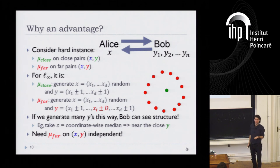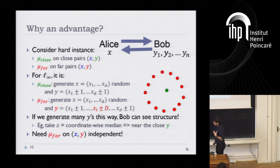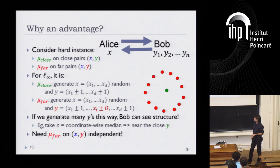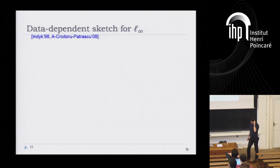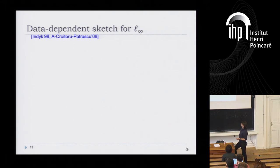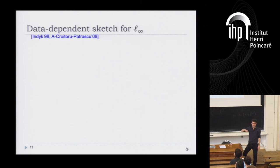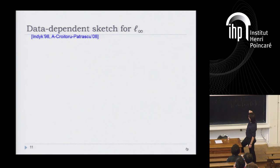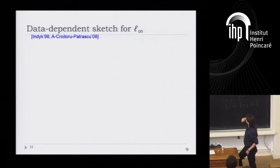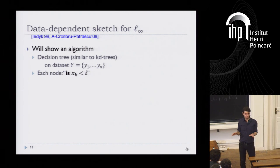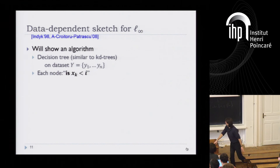This data-dependent sketch for L-infinity is due to Piotr Indyk from 1998, and the analysis I'll show is due to joint work with Durrant-Creator and Mihail Patraszko. I'll show you an algorithm — a decision tree that looks a little similar to a KD tree. On the dataset that Bob has, this algorithm partitions points using what we call coordinate cuts, basically looking at one coordinate of the input vector X compared to some number, going left or right based on that comparison, and recursing until each part has just one point.